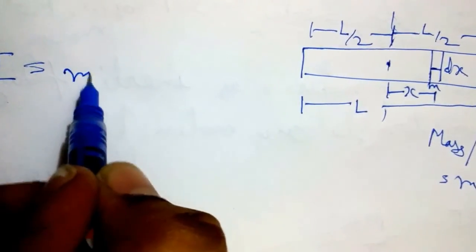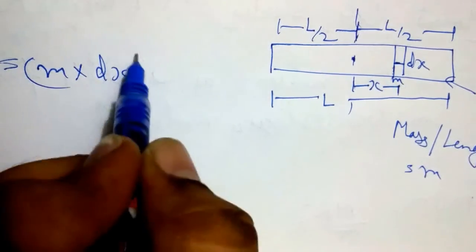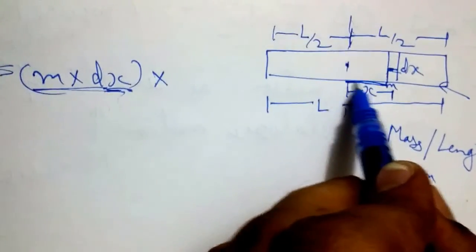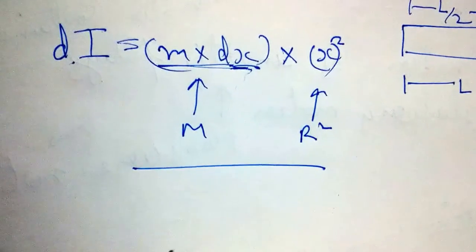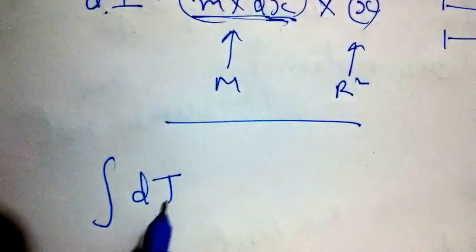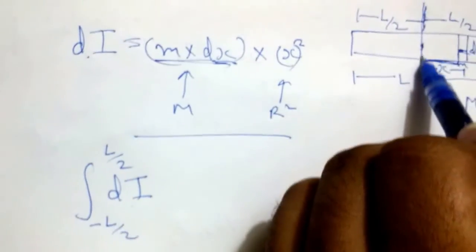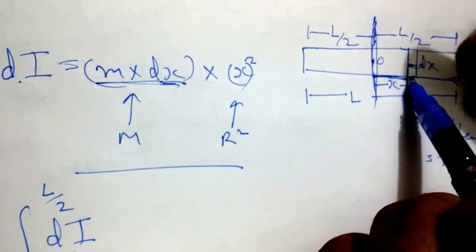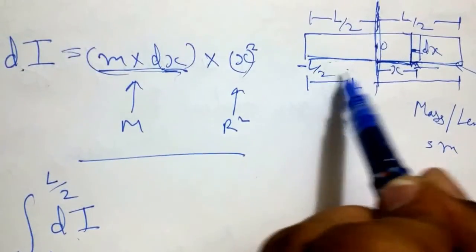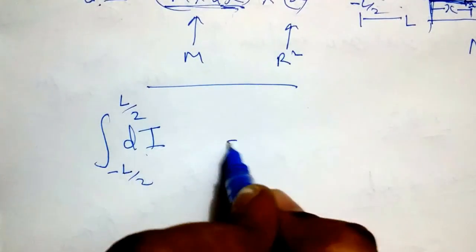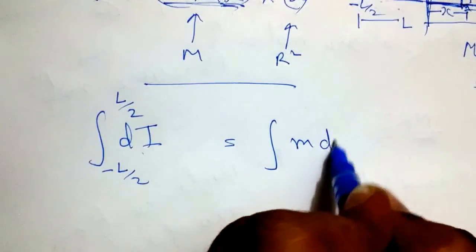The mass of this small element is mass per unit length (m) multiplied by dx. The moment of inertia of this element is dI = m·dx·x², which is simply the m·r² form. To find the moment of inertia of the entire rod, we integrate from −L/2 to +L/2, taking the axis of rotation as the origin.